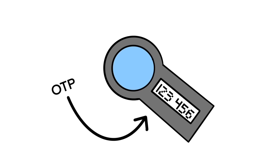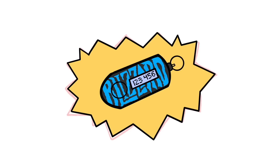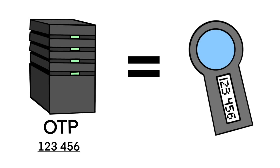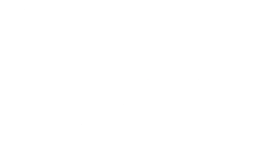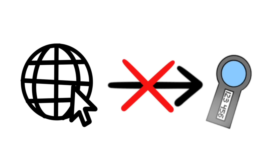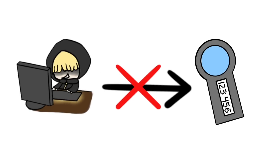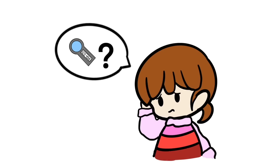Hard tokens are basically physical devices that generate a one-time password. The most common hard token is the key fob — my oldest one is my Blizzard account key fob. The key fob has one job: to generate a random number based on a secret key that matches the secret key on the service. This method is much more secure than the first two, as the key fob is physically removed from the internet and the one-time password can't be as easily intercepted by bad actors. The biggest issue is that you can lose the fob.